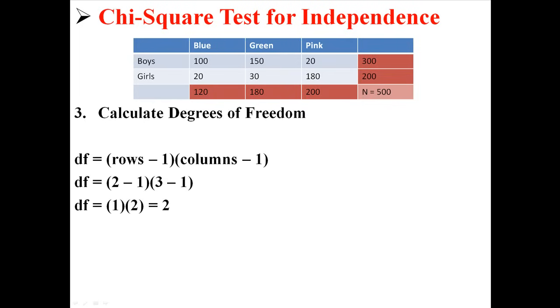Now calculating degrees of freedom, we are going to take rows minus one times columns minus one. Now we have two rows and three columns, so it is three minus one times two minus one, or one times two, which is two. This analysis will use two degrees of freedom.